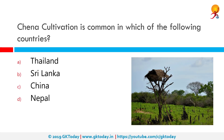Chena cultivation is common in which of the following countries? It's very common in Sri Lanka. Chena cultivation, or shifting agriculture, is the most primitive type of agriculture known to man from the dawn of civilization, and is practiced in Sri Lanka and some other Asian countries. It does not make use of the same piece of land and goes on rotation of crops.